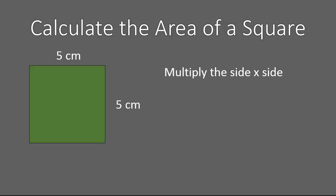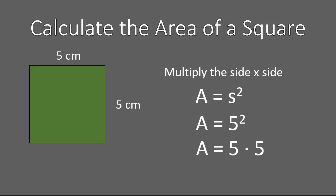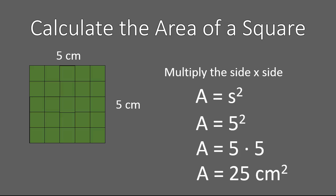Now it's your turn. Calculate the area of this square: five centimeters by five centimeters. Multiply side times side to calculate this. Here's how to solve it: the area of the square is the side squared — five squared, which is five times five — and that gives 25 square centimeters. You would see that there are 25 squares that would cover over this square. That's it for calculating the area of a square — just the side squared.